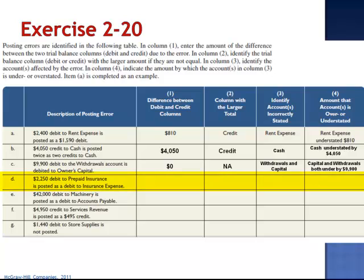Letter D — a $2,250 debit to prepaid insurance is posted as a debit to insurance expense. Since the dollars are correct, the difference between the debit and credit columns is zero, which makes column 2 not applicable. Both prepaid insurance and insurance expense are incorrectly stated. Prepaid insurance is understated by $2,250 and insurance expense is overstated by $2,250.